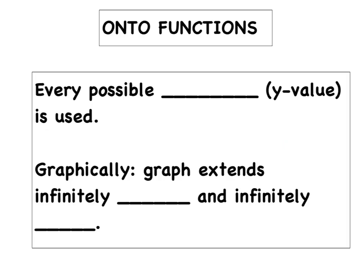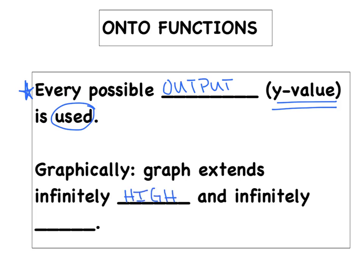Now we move on to the second half of our lesson: onto functions. The definition simply says that every possible output — every y value — is used. There will be no unused y values sitting on the sidelines. Graphically, we're going to check that our graphs extend infinitely high as well as infinitely low, which means they'll cover every single y value.